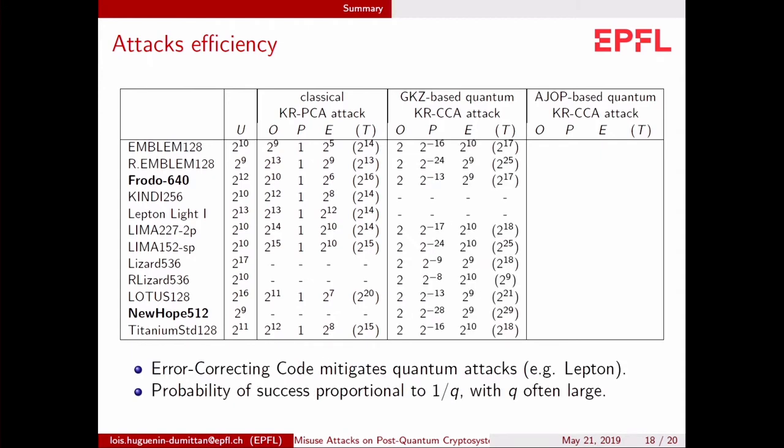Now here are the results for the first quantum attack, our quantum attack. There is no result for Kindi and Lepton. Kindi because it doesn't apparently fit into our Meta-PKC framework. And Lepton because it uses some error-correcting code. So intuitively, for some random pair of ciphertext U and V, the probability to get an error at the decoding is extremely high. So in the superposition, in a lot of the states of the superposition, we will have only error codes and no information about the secret key. So we lose actually the point of quantum computers and the point of quantum superposition.